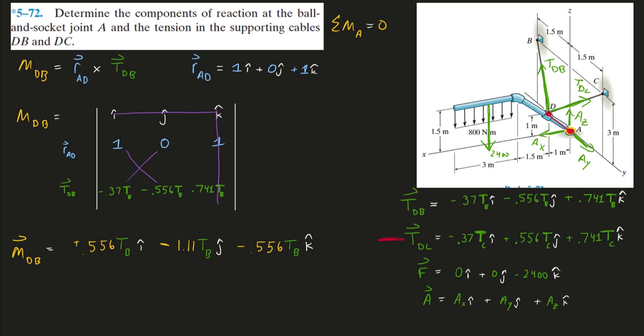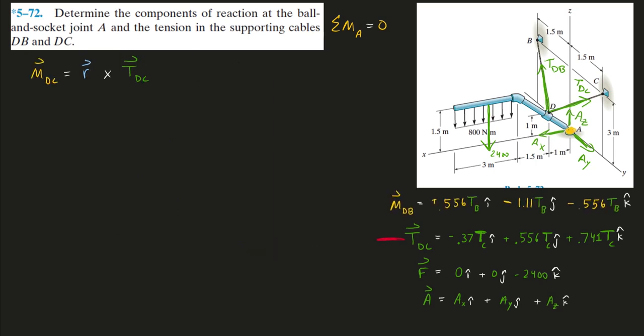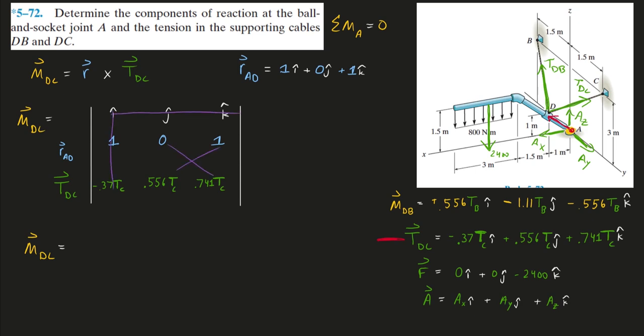So now my next one will be the moment of tension DC. For my R vector, I can just use that same from A to D as I did last time. So there's our cross product setup, and now we can perform that cross product. Covering up that X, we'll have zero minus .556 TDB. Cover up my J, it'll be .741 minus a negative .37, so 1.11. Again, we have to multiply that result by negative because it's J. And for our Z, it'll be .556 TC minus zero.